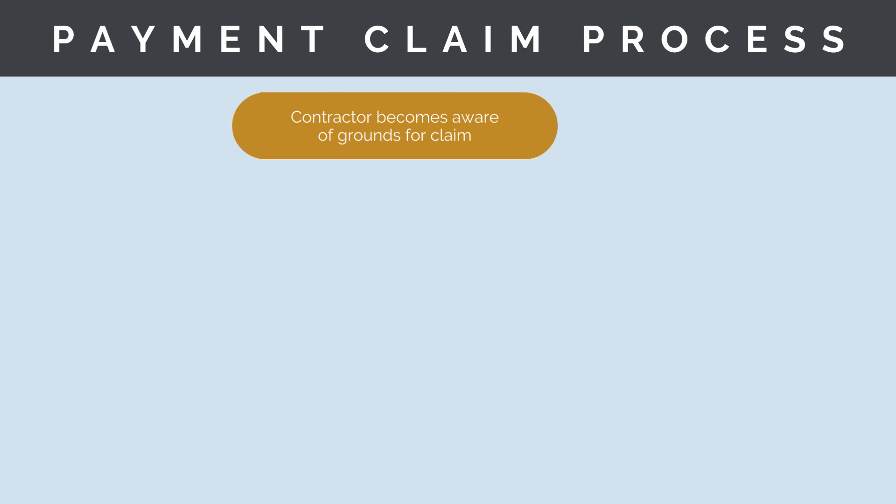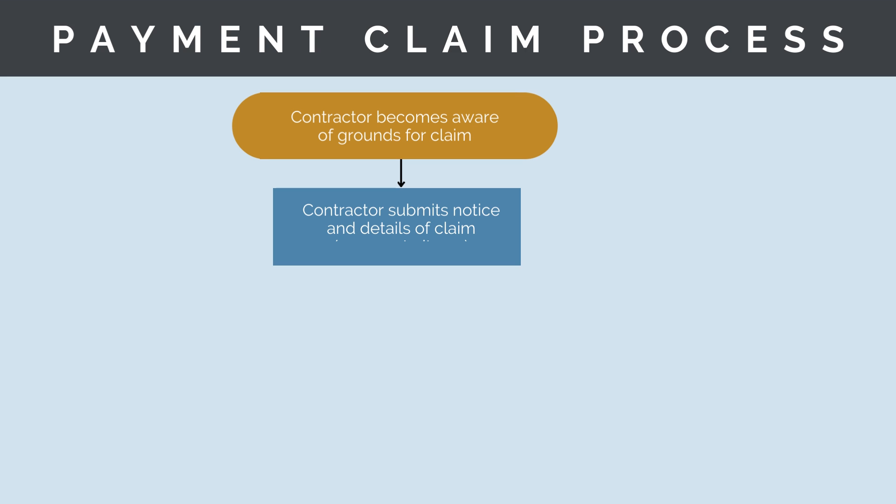The claim process begins with the contractor becoming aware of the grounds for a claim. The only exception is where the principal requests the contractor to accelerate their works. The contractor must then submit notice and details of the claim within a set period of time — you can't submit a claim for something that happened two years ago. As part of the claim submission, the contractor will need to provide justification and impact: what extension are they requesting and how much additional money are they requesting?